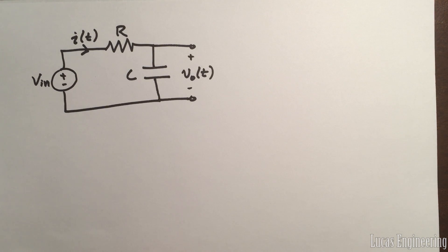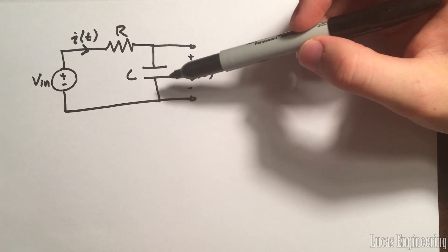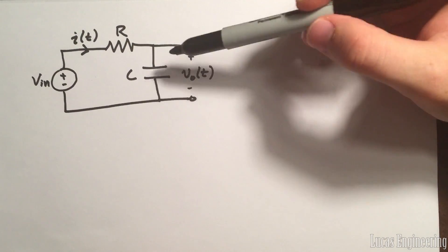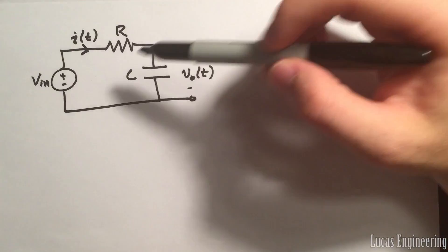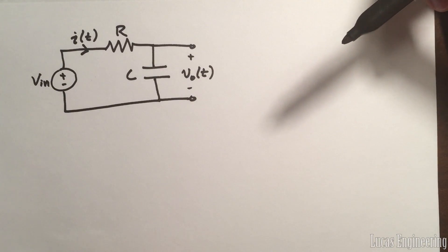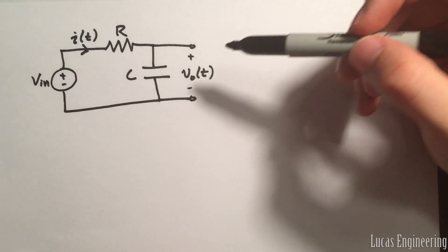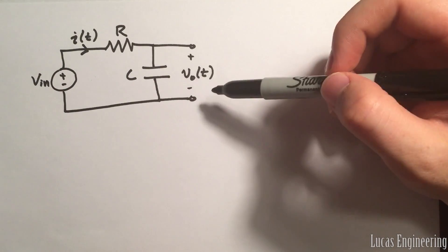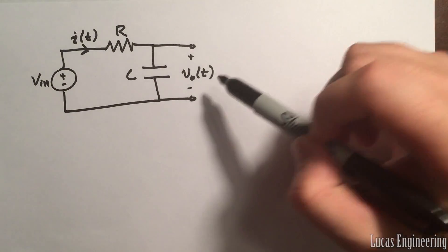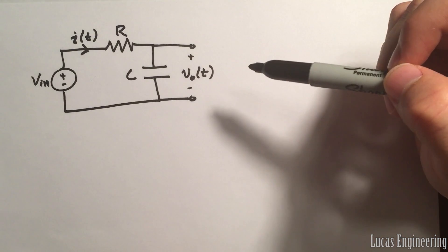Hey guys, today I want to talk about the RC circuit — more specifically the RC circuit where the resistor labeled R and the capacitor labeled C are in series together, and they're also in series with a DC voltage source. For this circuit, we want to find V_out, and V_out is a function of T because we have a capacitor in this circuit.